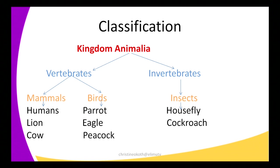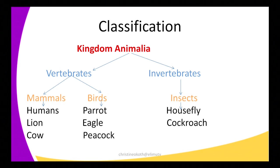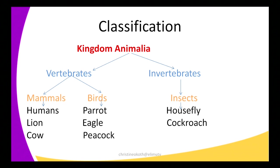Going down, we still subdivide these animals. Some we classify under vertebrates and some under invertebrates. Vertebrates are animals which have a backbone, and invertebrates are animals that do not have a backbone. In my list of organisms, under vertebrates you are going to find humans, lions, cow, parrot, eagle, and peacock. All these are vertebrates but I'm still going to subdivide them further.